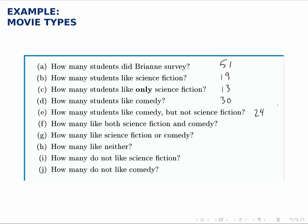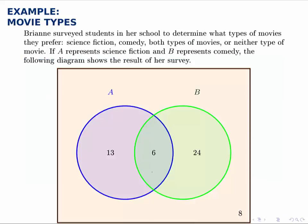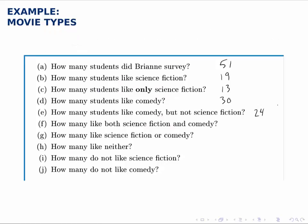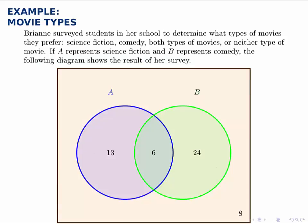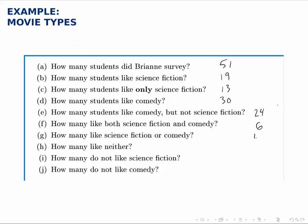How many like both? That's the students in the overlap, or the intersection between the two sets, and there are six of those students. How many like science fiction or comedy? That would be anyone in the union of these two sets — because 'and' refers to the intersection and 'or' refers to the union. In the union, there's 13 plus 6, which is 19, plus 24, which is 43. So there's a total of 43 students who like either science fiction or comedy.